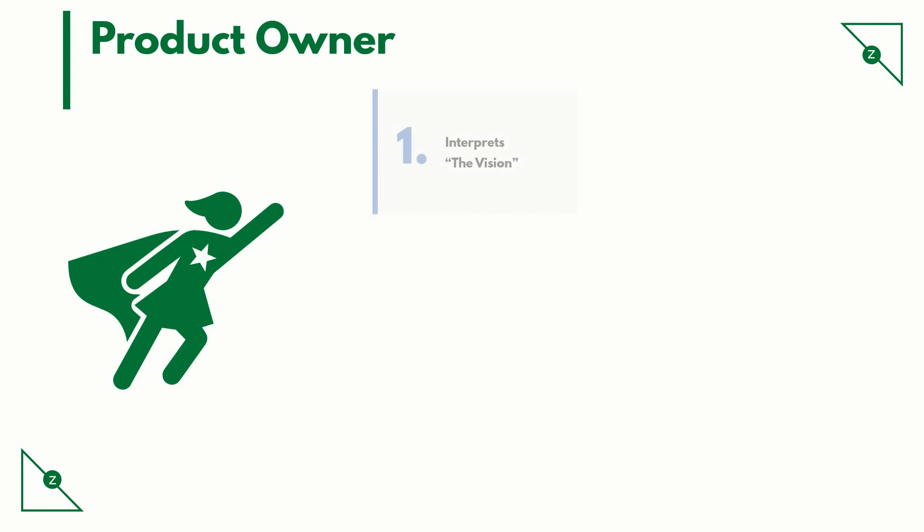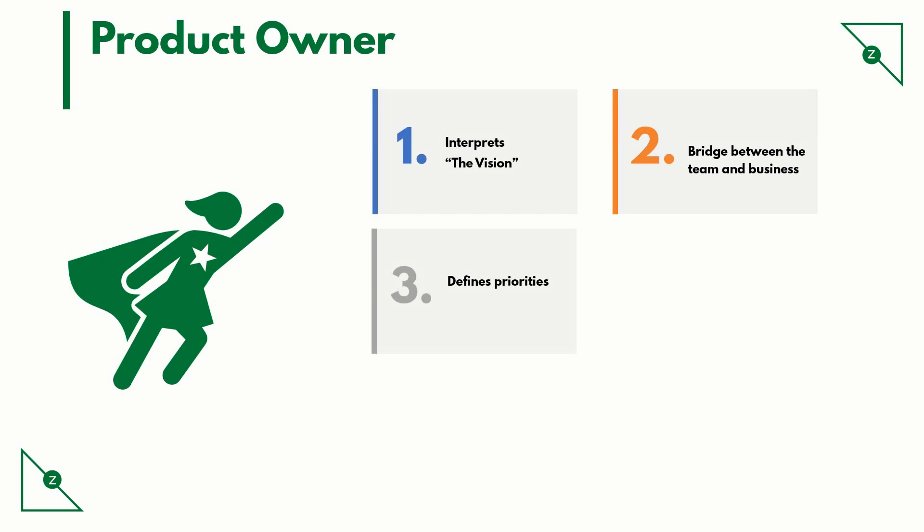The product owner interprets the vision. Product management typically gives abstract information like vision and roadmap; it is the product owner who interprets and translates the requirements into sprint-level details. The product owner acts as a bridge between the team and business, serving as an interface in translating requirements. He defines priorities and is responsible for prioritizing requirements in the backlog — top items in priority need immediate attention from the team. He also helps the team trace open defects. In essence, the product owner is the owner of the product backlog.